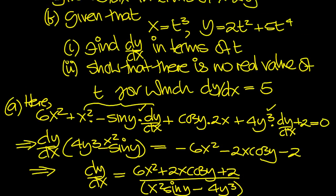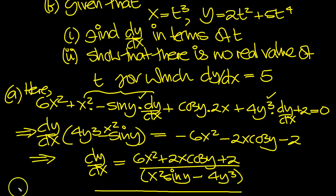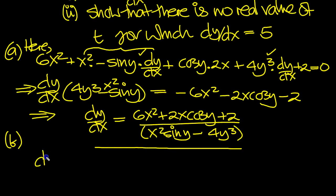So part b now. We've got find dy/dx, so part b. dx/dt will be 3t squared. So dx/dt is equal to 3t squared.